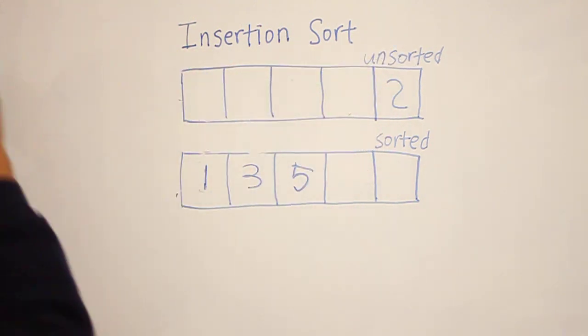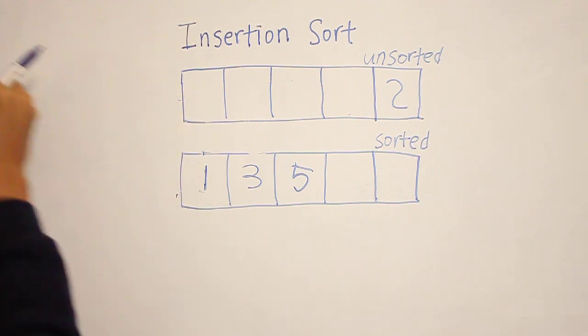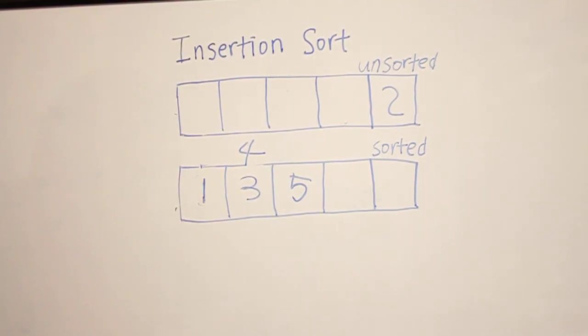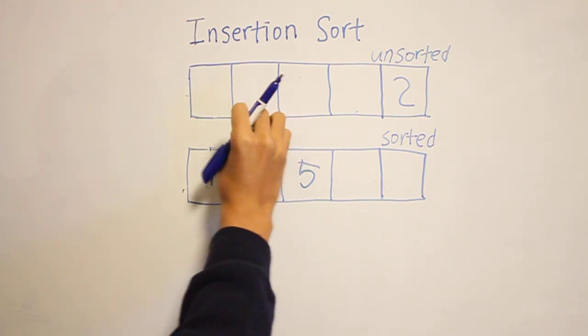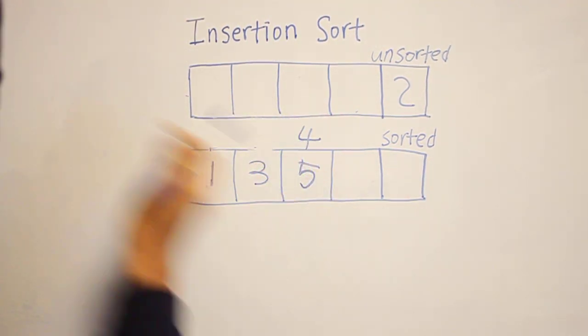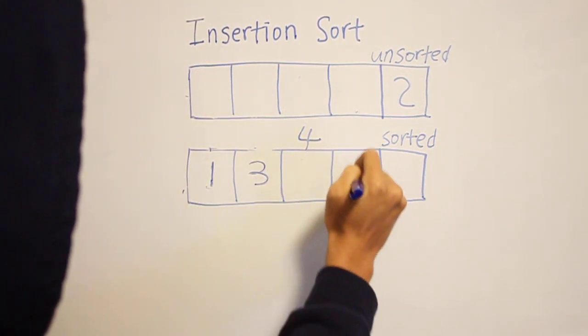We take four, compare it to one—four is bigger than one—and compare it to three. It's also bigger than three. Now, four is smaller than five, so you move five to the right and put four here.